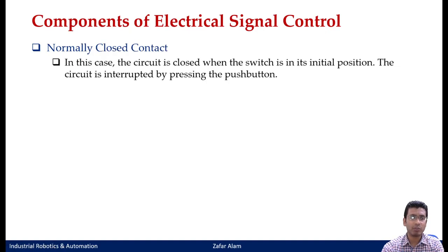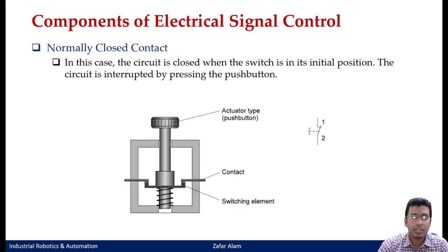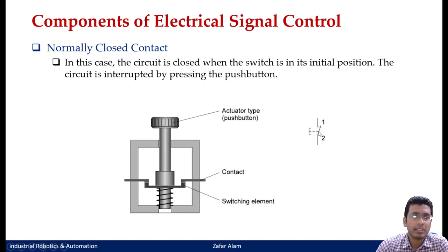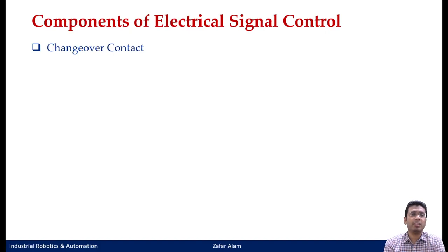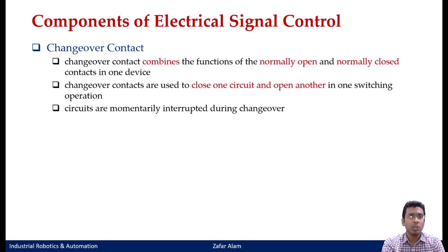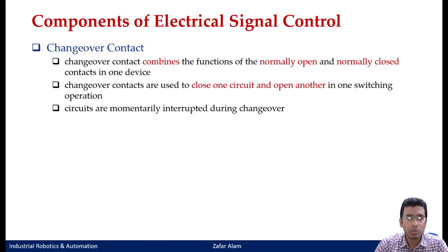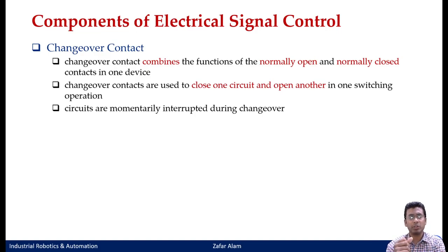In a normally closed contact, the circuit is closed when the switch is in its initial position — current is flowing through the path. Whenever you actuate it through the push button, the circuit would be interrupted or become open. So in its initial condition it is a closed circuit which allows current to pass, and the moment you press the push button the circuit breaks. There is also a third category known as the changeover contact, which combines the functionality of both normally open and normally closed contacts.